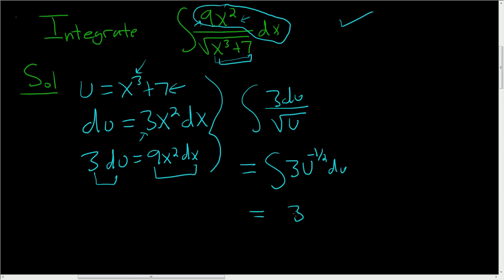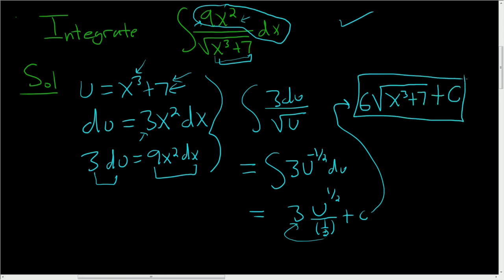So this is equal to 3u to the negative 1 half plus 1 is 1 half, and then you divide by 1 half plus a constant. This ends up being, when you divide by 1 half, you multiply by 2 over 1, so it's 6. 2 times 3 is 6. Square root, rewriting u to the 1 half, and u was x cubed plus 7, x cubed plus 7, plus our arbitrary constant.